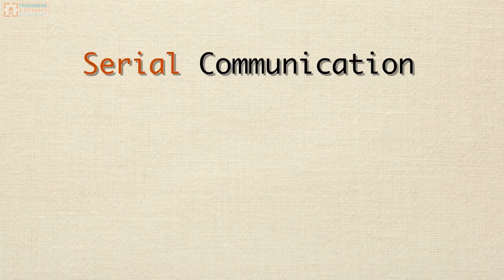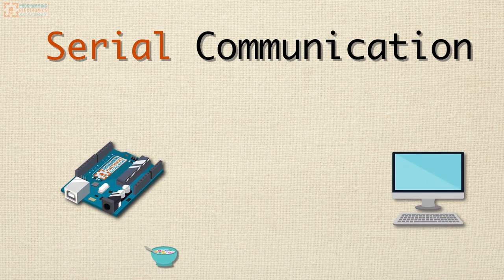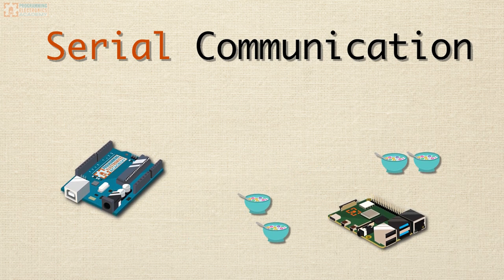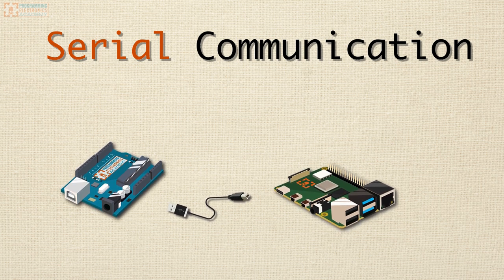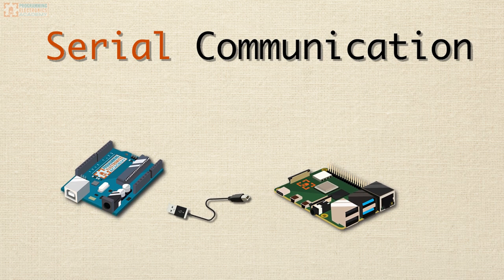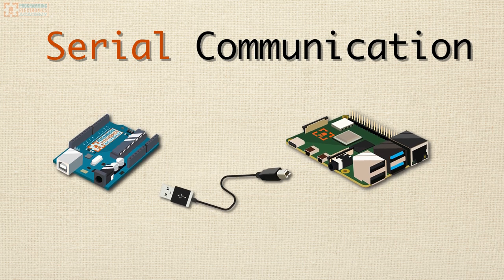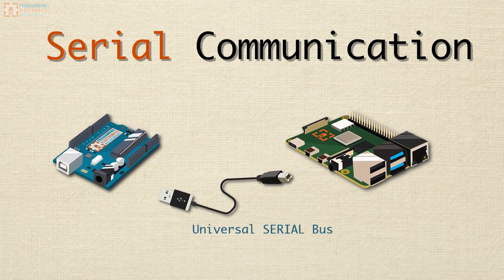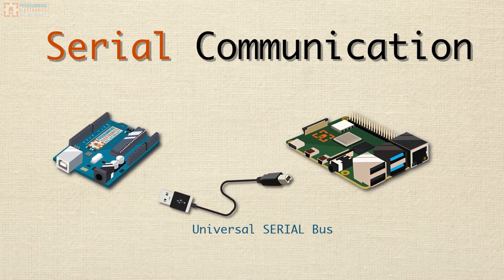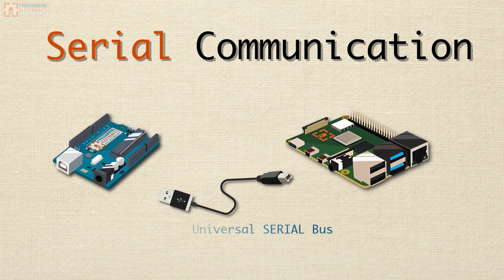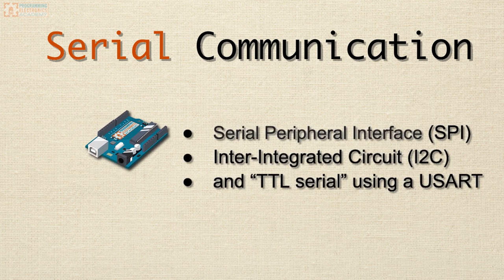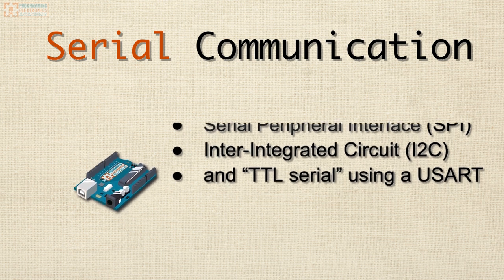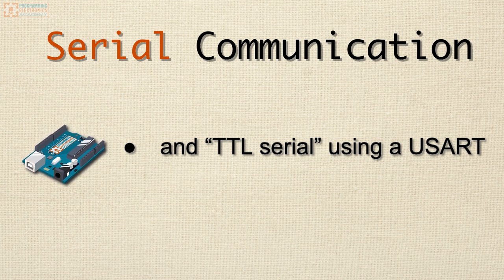So what the heck is serial communication? In a nutshell, serial communication is a method of sending and receiving information one bit at a time. Serial communication takes many different forms — just like there are many ways to communicate from one person to another, there are many ways to serially communicate from one device to another. Probably the most familiar method is over USB, which stands for Universal Serial Bus. USB is a serial communication protocol, and a protocol is just a way of doing something. Your Arduino can also communicate using other protocols like Serial Peripheral Interface (SPI), Inter-Integrated Circuit (I2C), and TTL Serial using a USART.